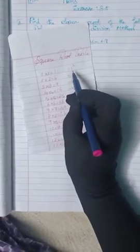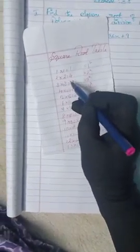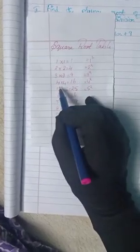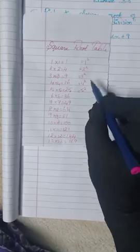Square root, we have studied in our lower class, square root table. We will recall. 1, 1s are 1, this 1 square. 2, 2s are 4, 2 square. 3, 3s are 9, 3 square. 4, 4s are 16, 4 square.